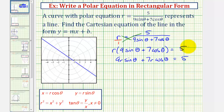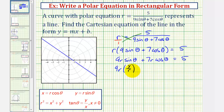Now we perform a substitution for sine theta and cosine theta. Since y equals r sine theta, sine theta equals y divided by r. And since x equals r cosine theta, cosine theta equals x divided by r. So for the first term, we have nine r times sine theta, which is y divided by r — notice the r's simplify out. Plus seven r times cosine theta, where cosine theta is x divided by r, equals five.